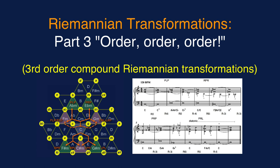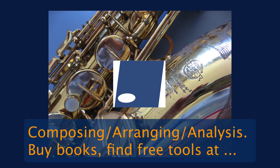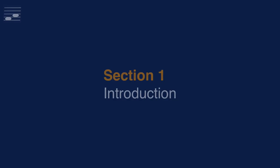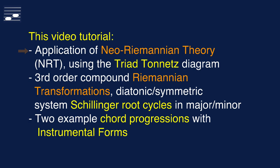Two example chord progressions with third-order transformations only are turned into short compositions. You may be interested in the practical application of Neo-Riemannian theory and chords moving through the triad-Tonetz diagram. In this episode the focus is on third-order compound Riemannian transformations in major and minor, determining the corresponding Schillinger diatonic and symmetric system root cycles, and how using the instrumental forms concept turns chord progressions into example compositions.